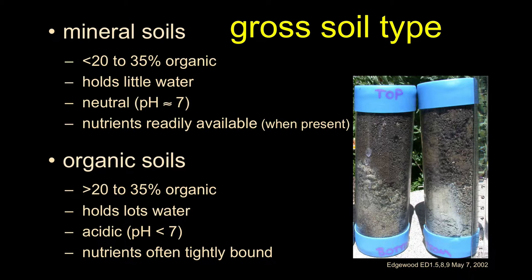Organic soils are different. They tend to have greater amounts of percent organics, retain a lot of water, and tend to be acidic. The nutrients are tightly bound — which at first sounds bad, but it means we don't get flushes of nutrients. Instead, there's a more consistent release or availability of nutrients, which is generally considered to be a better thing.